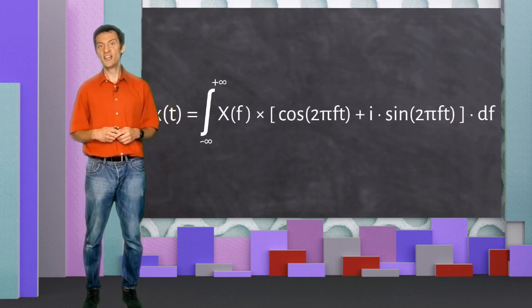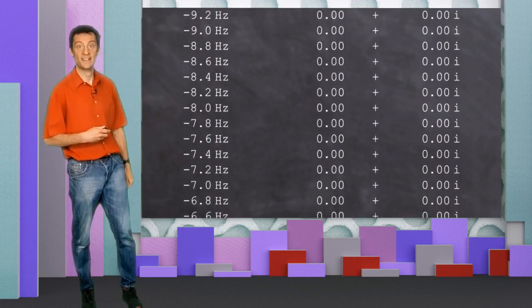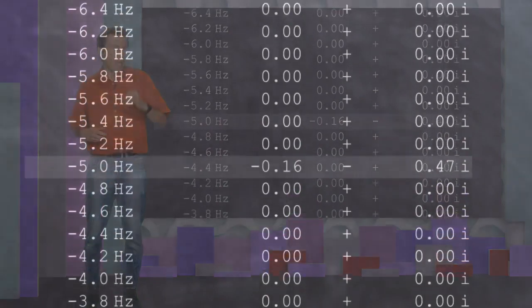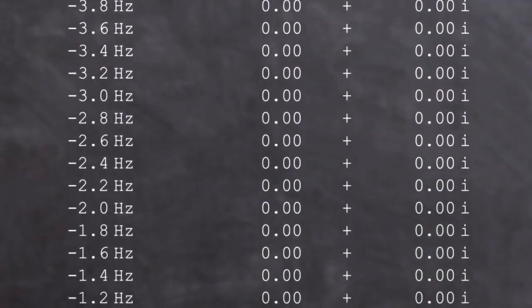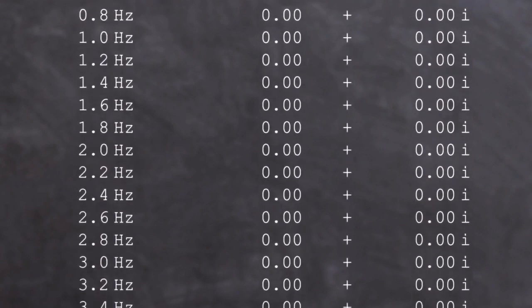When we do this, in the final stage of the calculation, we'll end up with a list of complex numbers that need to be added together. Each complex number represents the contribution of one particular frequency to the signal, at a specific moment in time.